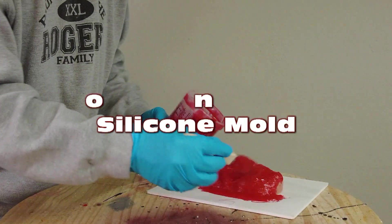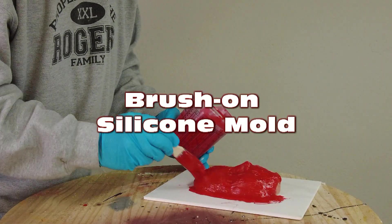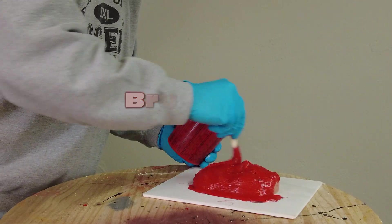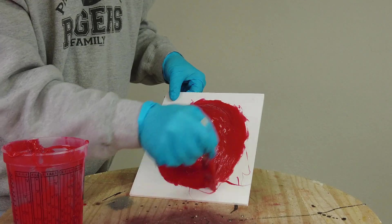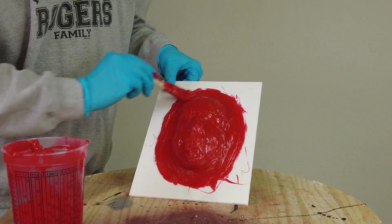Brush-on mold making. In this tutorial, we're going to introduce some new 1-to-1 ratio platinum silicones and show how to make a basic brush-on mold using the 5140 platinum silicone.